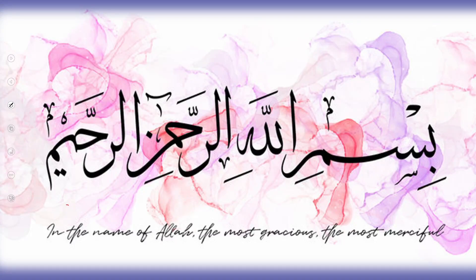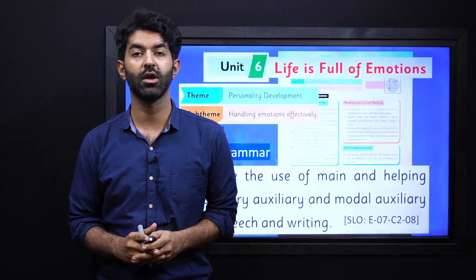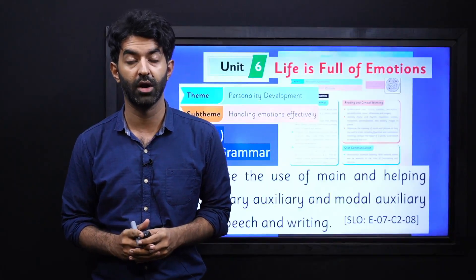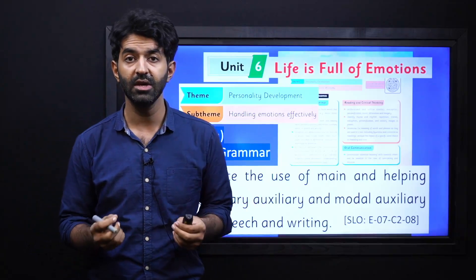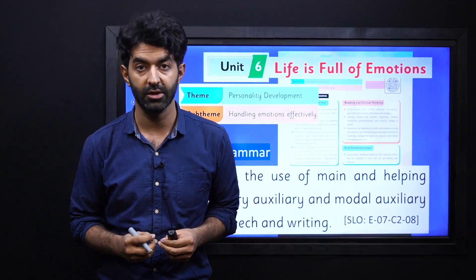Bismillah ar-Rahman ar-Rahim. As-salamu alaykum students. I'm your English teacher Zia. I hope that you're doing well. I welcome you to English grade 7 video lessons. Today we will cover a student's learning outcome from our unit number 6. Let's see what it is and how we can achieve it.